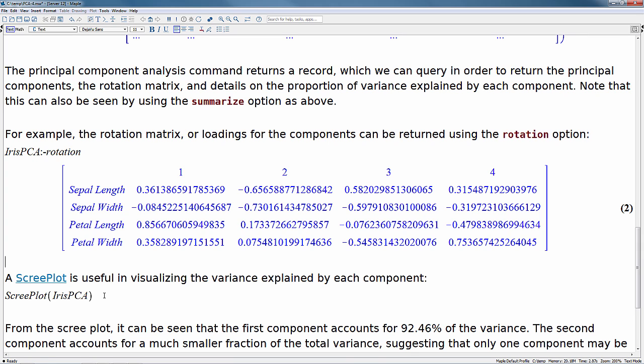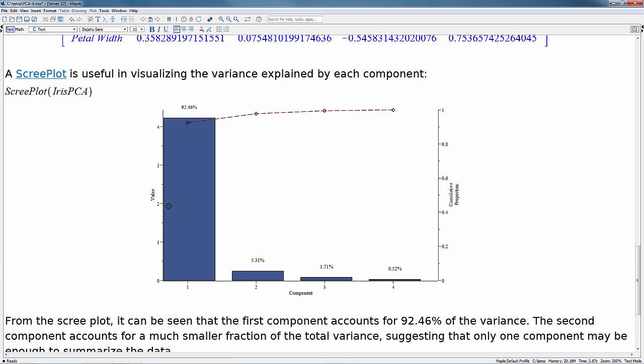One of those is called screplot. The screplot is useful for visualizing the variance explained by each component. If we run the screplot on the PCA results, we can quickly see that here are each one of our components in order. As we saw before, the first one accounts for 92.46% of our variance. The second is only 5%, and we go down from there. This red line is our cumulative proportion of the variance explained. We're hovering up around 92 to start with, and we're just getting up to 100 by the time we're at number 4.